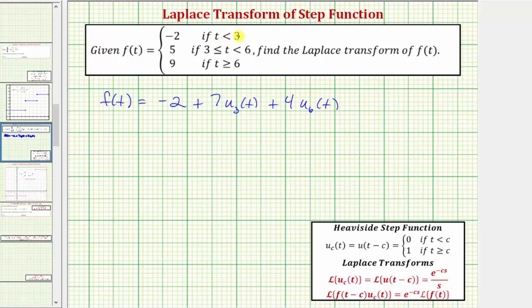When t is less than three, the function value would be negative two plus seven times zero plus four times zero. When t is greater than or equal to three and less than six, we'd have negative two plus seven times one, which is five, plus four times zero, which is five. And finally when t is greater than or equal to six, we'd have negative two plus seven times one plus four times one, which gives us a function value of nine.